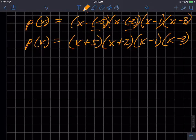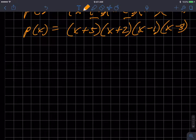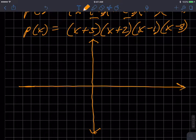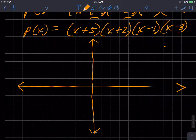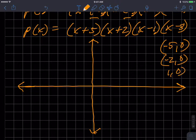Let's quickly examine what's going on graphically with this. If I had a function with those roots, those roots would correspond to x intercept points of negative five comma zero. Those are x intercepts. Negative two comma zero, one comma zero, and three comma zero.